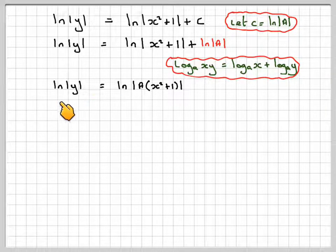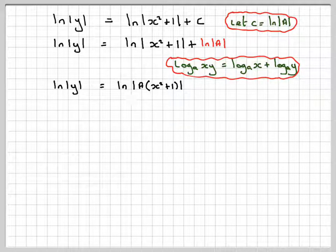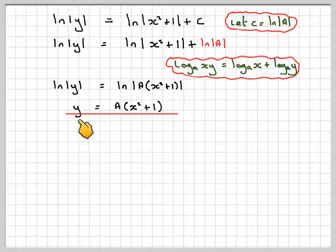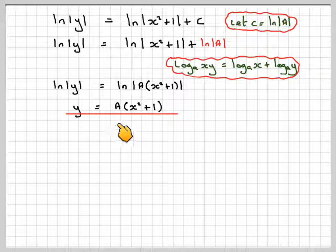Because we've just got ln on both sides now and nothing else added on, we can say that the general solution will be y equals a times x squared plus 1, where a is just a constant.